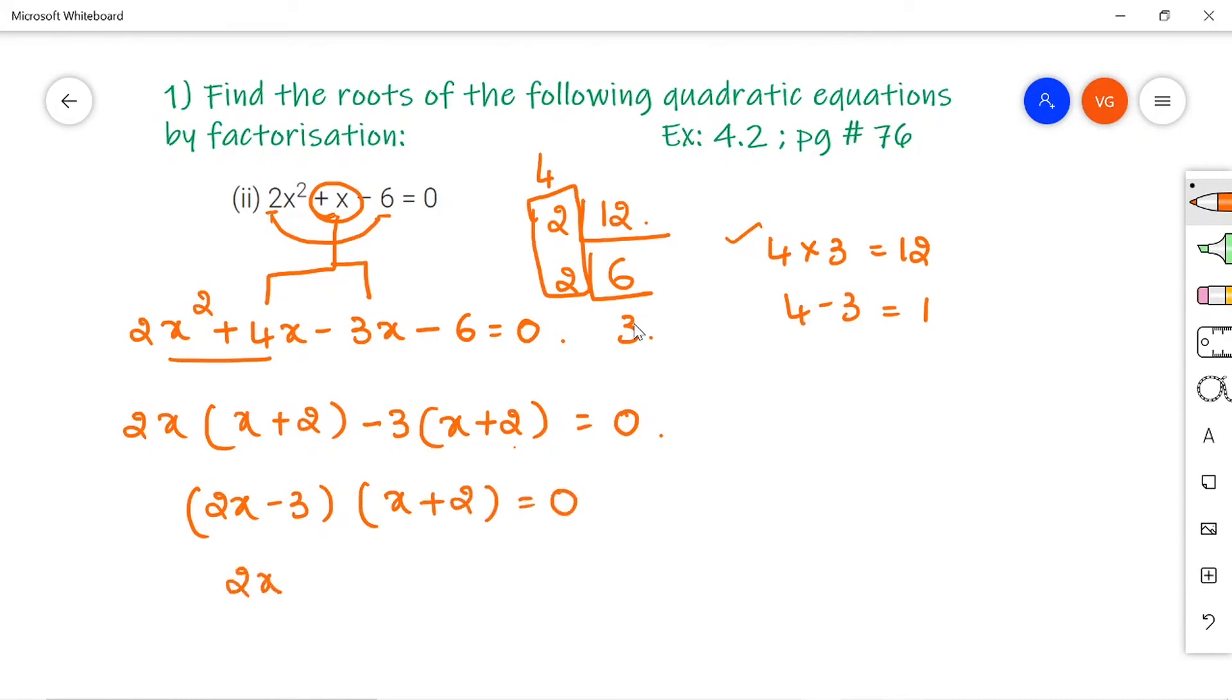Equate now: 2x - 3 = 0 and x + 2 = 0. That is, x = 3/2 and x = -2.